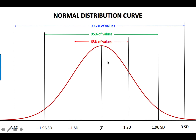This is a normal distribution curve. I am showing it here simply to revise that 68% of the values fall within one standard deviation of the mean, 95% of the values fall between two standard deviations of the mean, and 99.7% of the values fall between three standard deviations of the mean. This is just a revision for you.